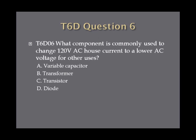Question 6. What component is commonly used to change a 120 volt AC house current to a lower AC voltage for other uses? A. Variable capacitor, B. Transformer, C. Transistor, or D. Diode?